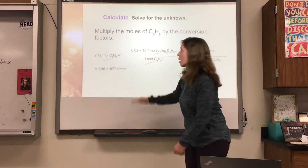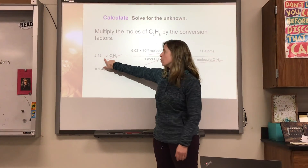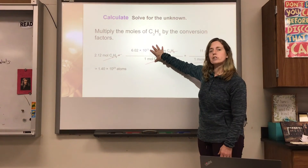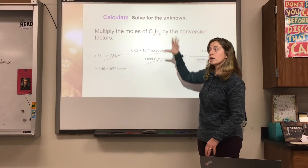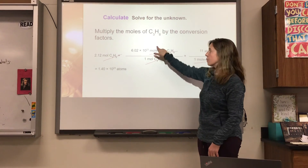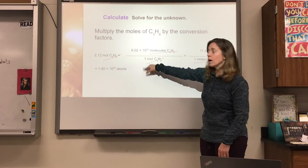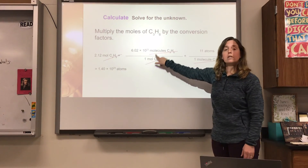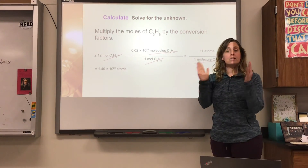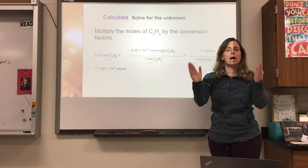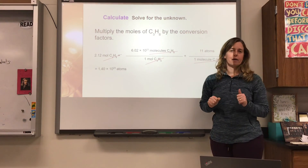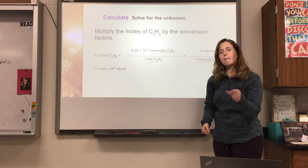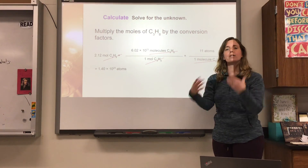So I take the 2.12 moles of propane given in the problem and multiply by the conversion factor — going from moles down to particles — which is Avogadro's constant divided by one. That tells me how many molecules of propane I have. Then I multiply by 11 atoms per molecule to get my final answer.